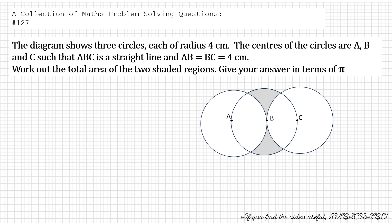The diagram shows three circles each of radius 4 cm. The centers of the circles are A, B and C such that ABC is a straight line and AB equals BC equals 4 cm. Work out the total area of the two shaded regions. Give your answer in terms of pi.